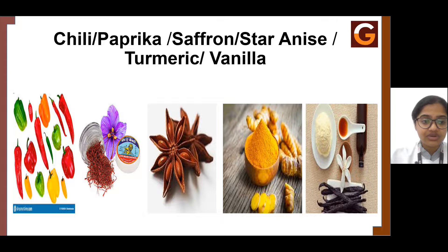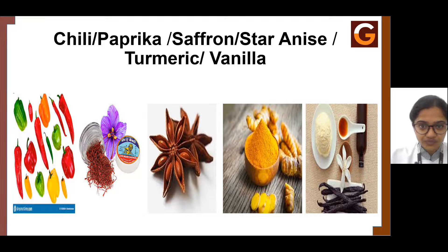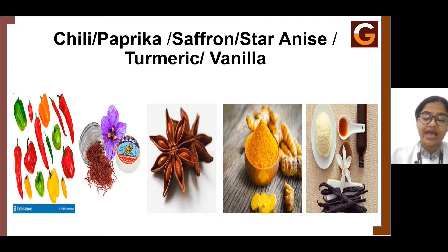The next one is saffron. Saffron is basically the stigma of a flower, widely obtained in Kashmir. It gives out a color in the product and is widely used in rice preparations and also in dessert preparations. Saffron imparts a very pale to bright yellowish color. It is also called as kesar in common language, and it is one of the most expensive spices in the world. It is used in Indian sweets like kulfi, where pistachio, saffron, and sugar are used. It is also used for garnishing rice preparations like biryani, where a little bit of milk and saffron are mixed and added on top to impart a bright yellow color.